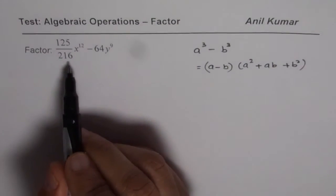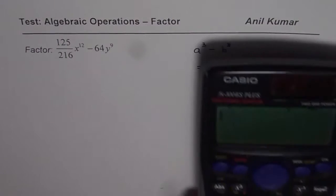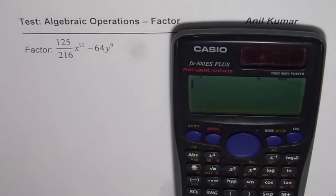Now in this particular case, you can use calculator to check if 125 is cube of a number or not. See 5 cube is 125. You could also check cube root. We will check with cube root of 216. That is equal to 6.